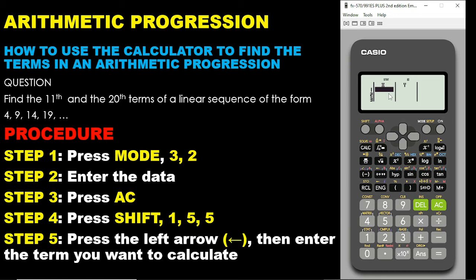The second term is 9, so under X we put 2 — that's the second term — and the value in the question is 9, so under Y we put 9. The values you see here are placed under Y, and they stand for the first, second, third, and fourth terms. Under X, we put each term number and press equals. We enter the first, second, and third terms this way. In an exam you only need to enter the first two values, but for the purpose of this education, I entered the first three terms.